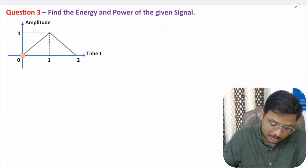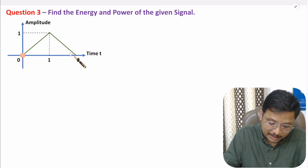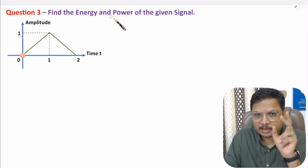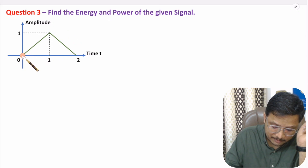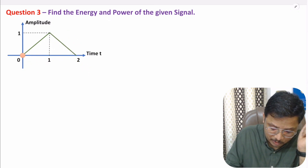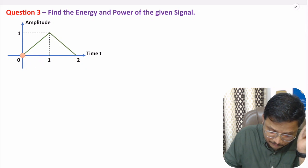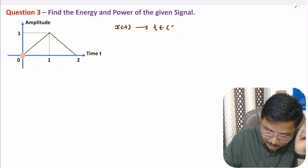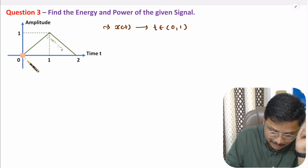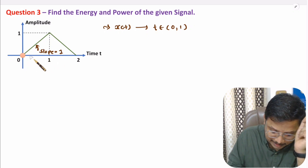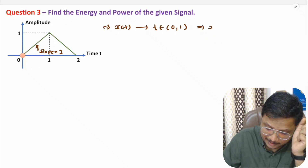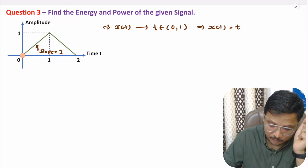In the last question, we have a triangular waveform and we need to identify its energy and power. It has finite duration and finite amplitude, so we will identify its energy. We need to represent the signal as a function first. For t between 0 and 1, x(t) is a ramp signal with slope equal to unity — change in y divided by change in x is 1, starting from t = 0 — so x(t) = t for t in [0, 1].